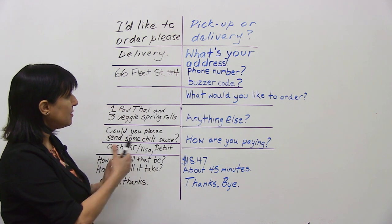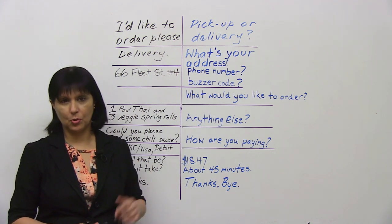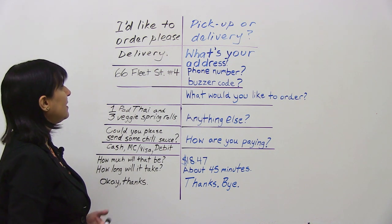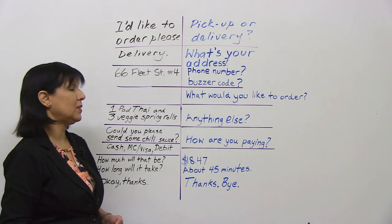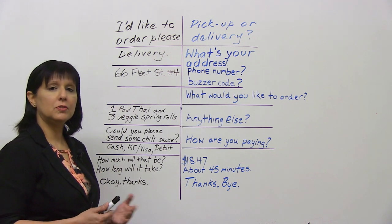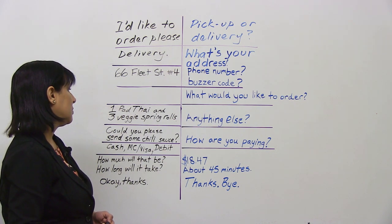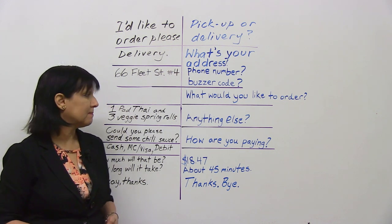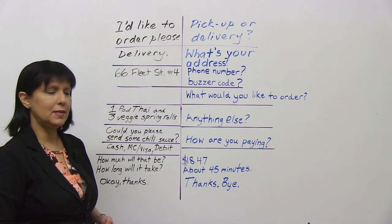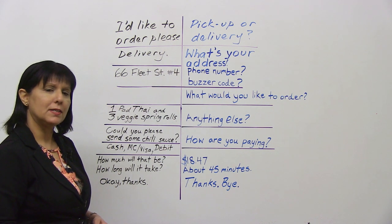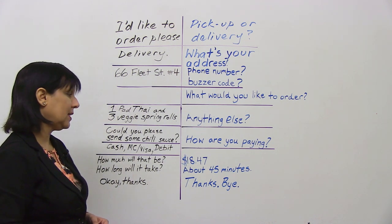So you see that the conversation goes pretty fast, but if you know what to expect, it will be a lot easier for you to order the food. Let's run through it one last time — fast. "I'd like to order, please." "Pickup or delivery?" "Delivery." "What's your address?" "66 Fleet Street, apartment 4." "Your phone number?" "612-9148." "Your buzzer code?" "317." "What would you like to order?" "One pad thai and three veggie spring rolls, please." "Anything else?" "Could you send some chili sauce, please?" "How are you paying?" "Cash." "How much will that be?" "18.47." "And how long will it take?" "About half an hour." "Okay. Thanks." "Thanks. Bye."